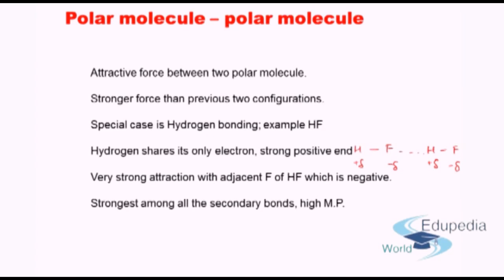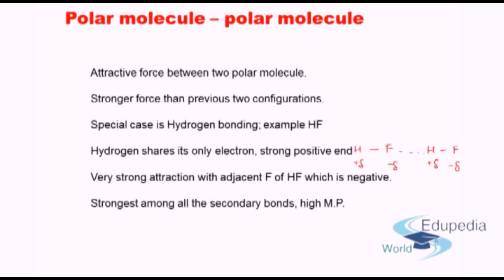This brings us to the close of the chapter on atomic structure and atomic bonding. In today's lecture we saw the different kinds of secondary bonding, which are not chemical bonding because there is no sharing or transfer of electrons. Rather, there is creation of an asymmetric charge distribution, either inherently or induced, which leads to attraction — as seen in hydrogen fluoride. Hydrogen bonding can also be seen in hydrogen chloride; for hydrogen bonding to occur there should be a high electronegativity difference with hydrogen, such as with fluorine or bromine.